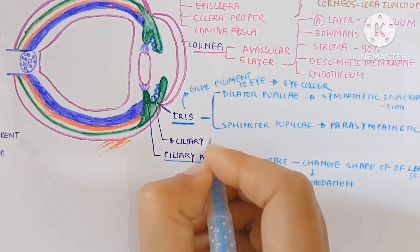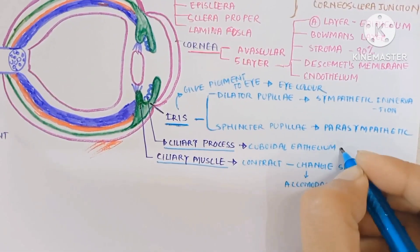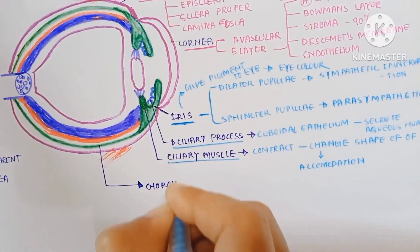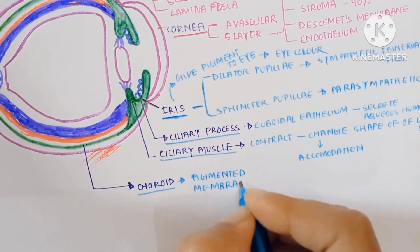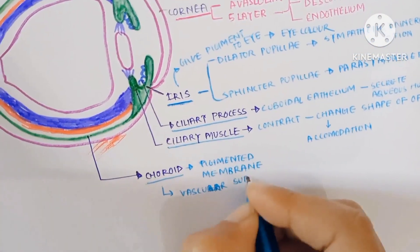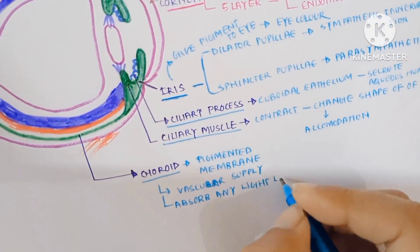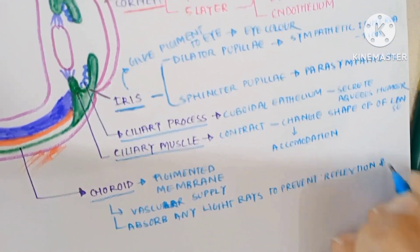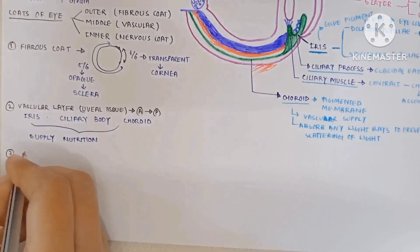Next is the ciliary process. The ciliary process is made up of cuboidal epithelium which secretes aqueous humor. The last part of the vascular coat is the choroid. Choroid is a pigmented membrane which supplies vascular support to the eyeball. It absorbs any light rays to prevent reflection and scattering of light coming inside the eye.